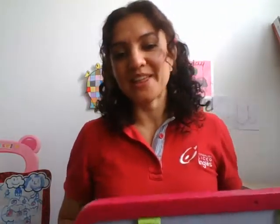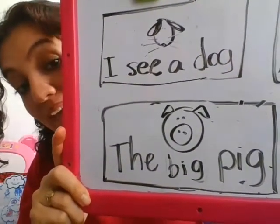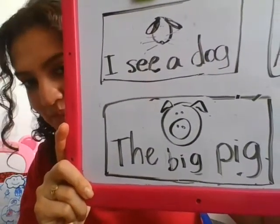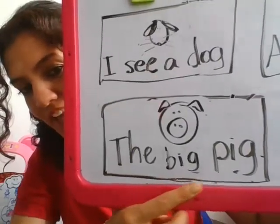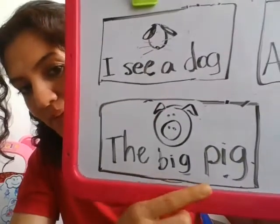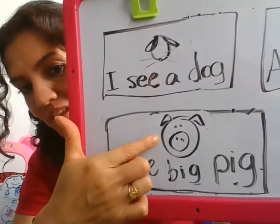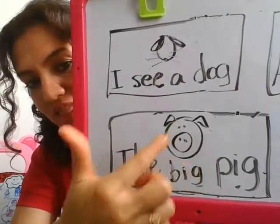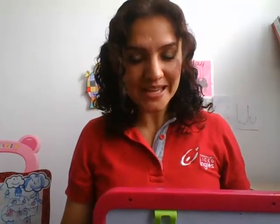Next page — the fifth one — is about a big pig, right? The big pig is here. You need this sentence and this drawing: a drawing of a pig and your sentence with the pig.